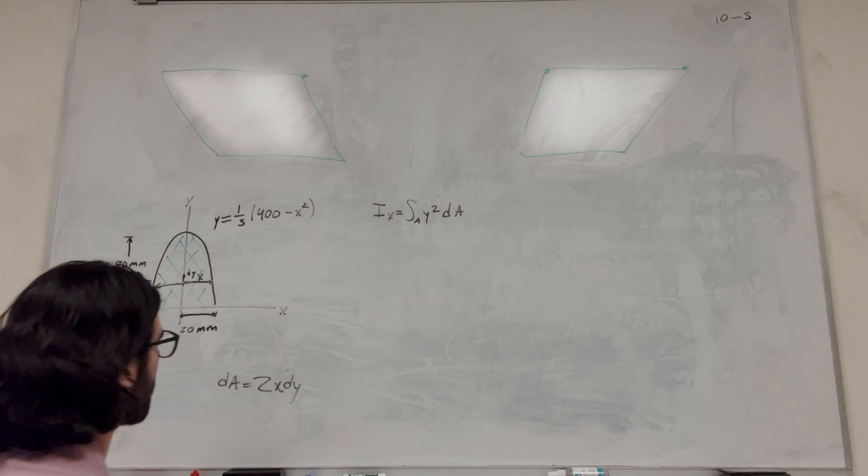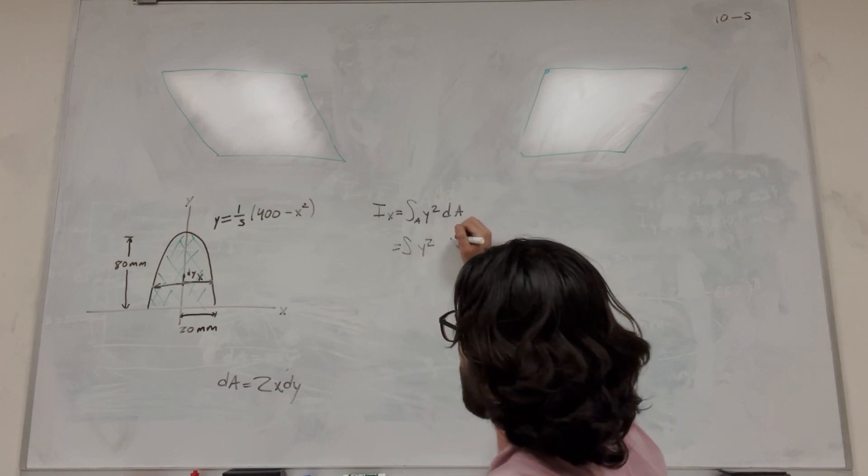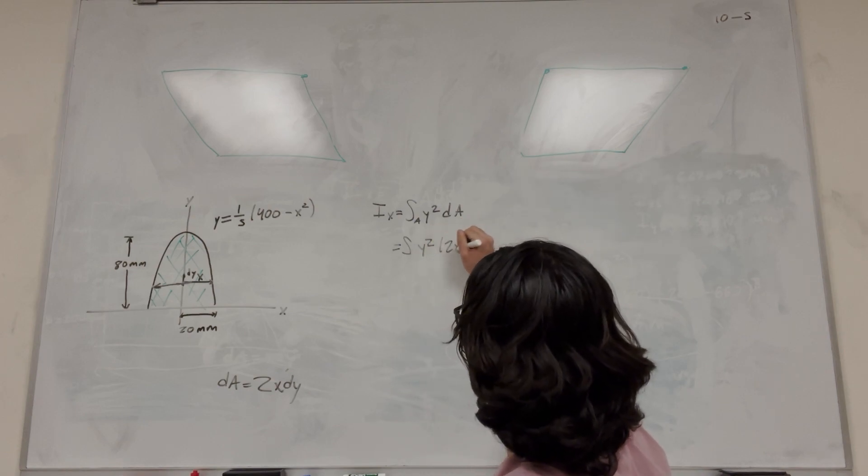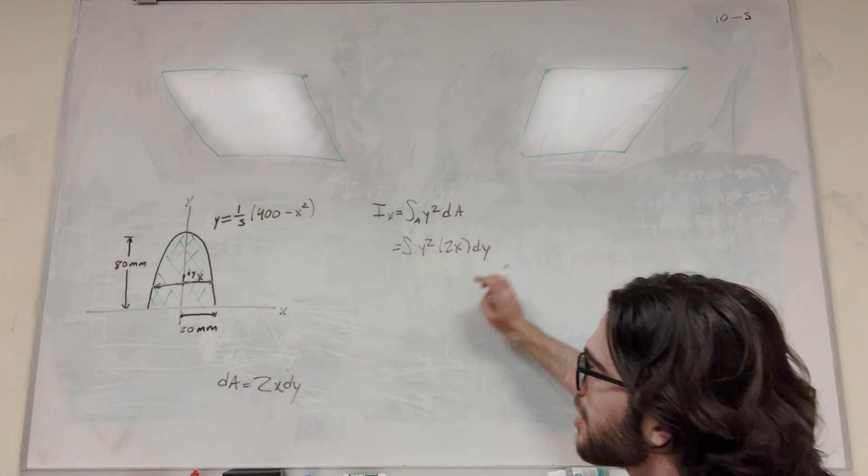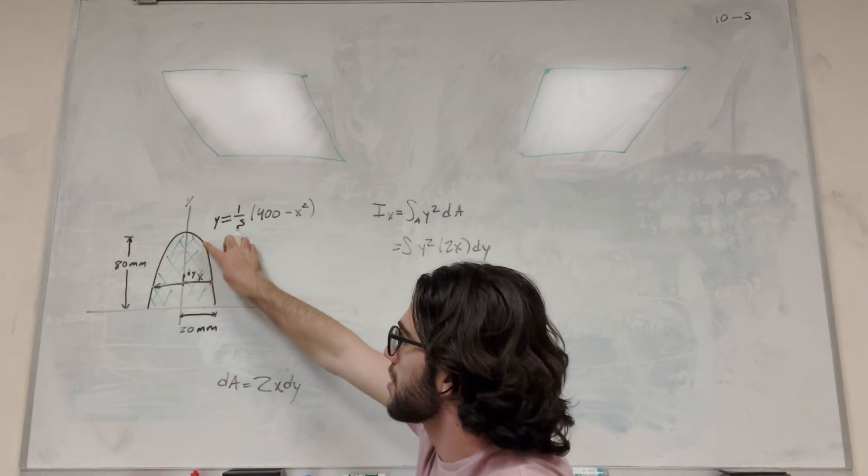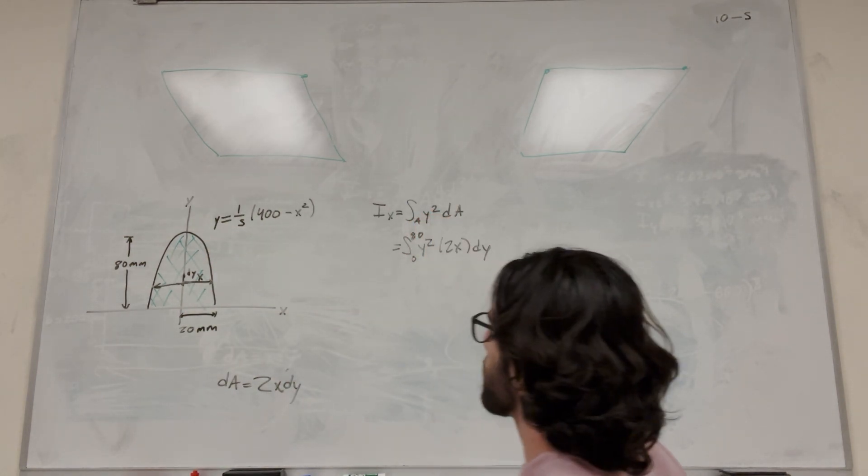So this is where we're going to be plugging in. So y squared, and then dA becomes 2x dy. We need to find out what our bounds for dy are. So y goes from 0 to 80. That's where we're going to plug right in there.